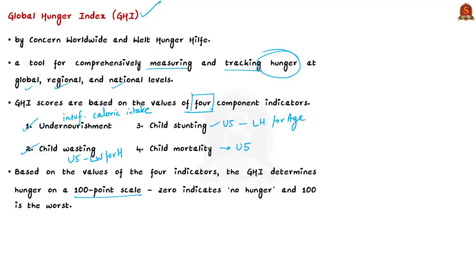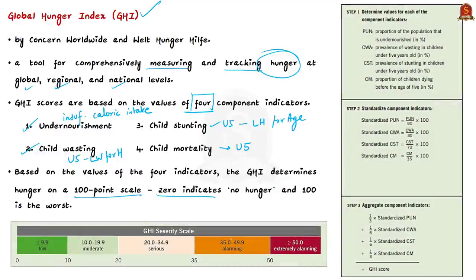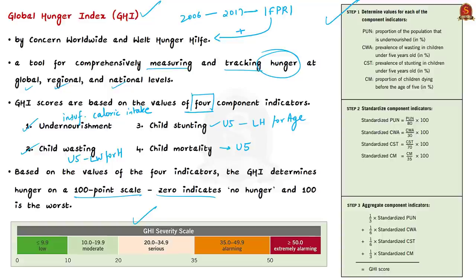On this scale, 0 indicates no hunger — the best possible score — and 100 indicates the worst form of hunger. Since 2006, on an annual basis, the Global Hunger Index has been reporting on the state of hunger globally by region and by country. Until 2017, the index was released jointly by the International Food Policy Research Institute along with two international NGOs — Concern Worldwide and Welthungerhilfe. But since 2018, IFPRI is no longer part of the release.